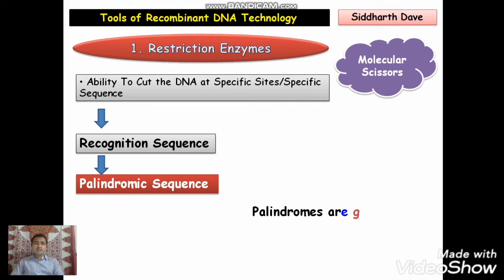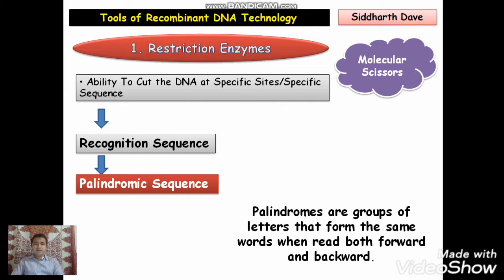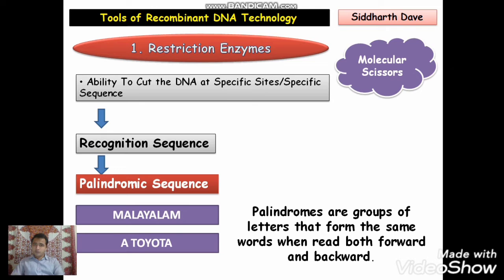You may have a question about palindromic sequence. Palindromes are groups of letters that form the same word when read both forward and backward — यानि कि अगर आप इस word को आगे से और पीछे से read करोगे तो it will remain the same. For example, Malayalam — when you read this word from forward and backward, it will remain the same. Another example is 'a Toyota' — it will remain the same when read forward and backward. Similarly, there is a sequence 5' GAATTC 3', which is a recognition sequence of a restriction enzyme — यह एक palindromic sequence है.